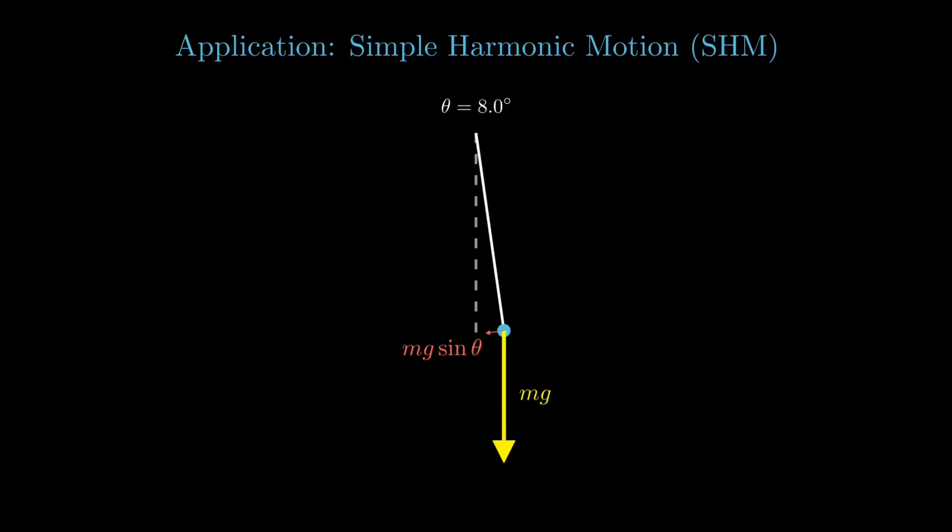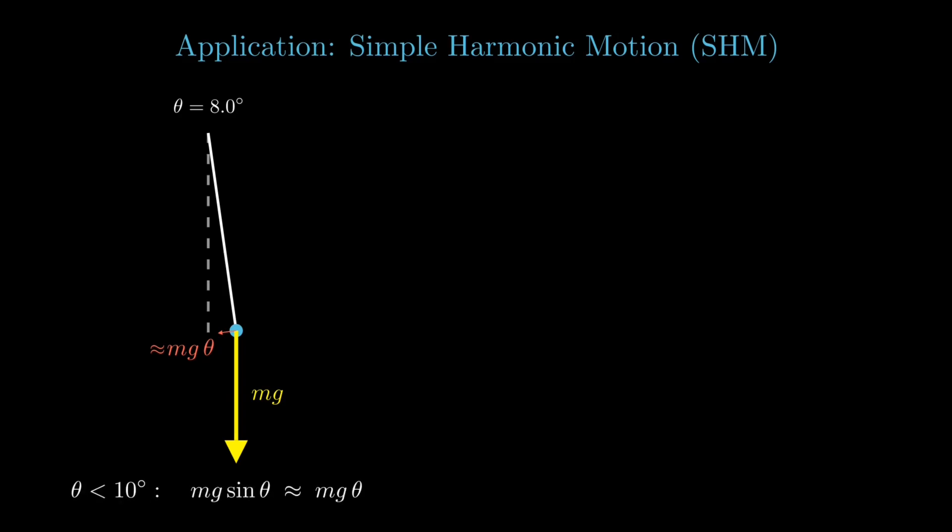Gravity, as always, pulls straight downward with force mg acting on the bob, and we resolve the gravitational force into components, one along the pendulum string which just keeps the string taut, and another tangential to the motion given by mg sine theta. It's this tangential component that actually drives the pendulum's oscillations.